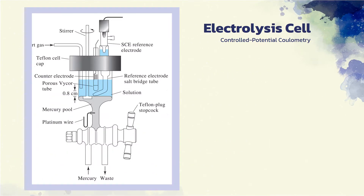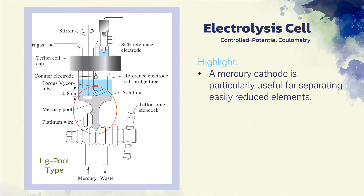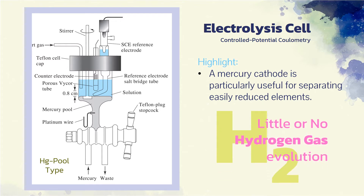The salt bridge is needed to prevent the reaction products formed at the counter electrode from diffusing into the analyte solution and interfering. The second type of cell shown in the figure is a mercury pool type. A mercury cathode is particularly useful for separating easily reduced elements as a preliminary step in an analysis. It has found considerable use for the coulometric determination of several metallic cations that form metals soluble in mercury. Little or no hydrogen evolution occurs, even at high applied potentials, because of the large overvoltage of hydrogen on mercury.